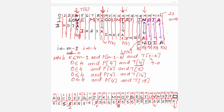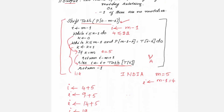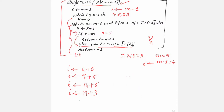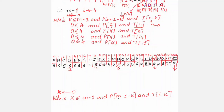With i equal to 19 and k equal to 0, we compare p[4] ('a') against t[19], which is 'n'. No match. The else part executes: the shift table value for 'n' is 3. So i = 19 + 3 = 22. The pattern shifts 3 positions — 'I', 'n', 'd', 'i', 'a' — and i now points to index 22, the last position in the text.